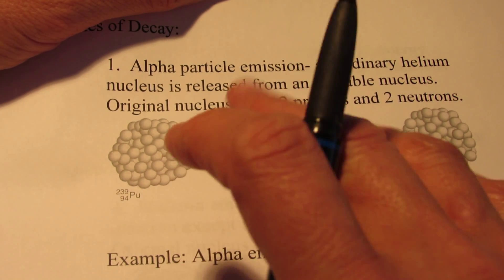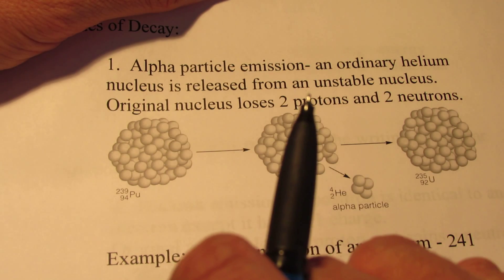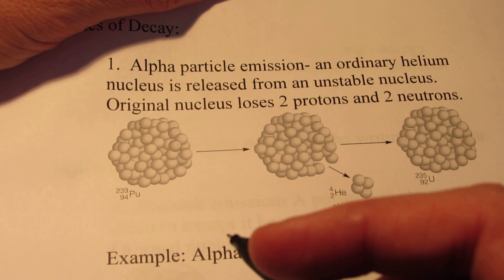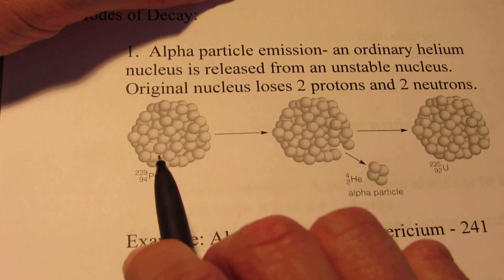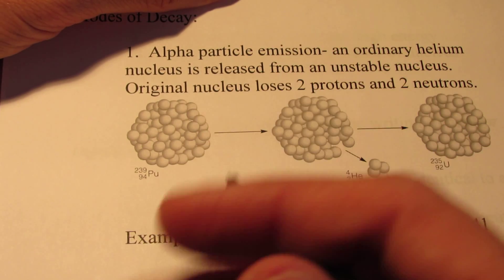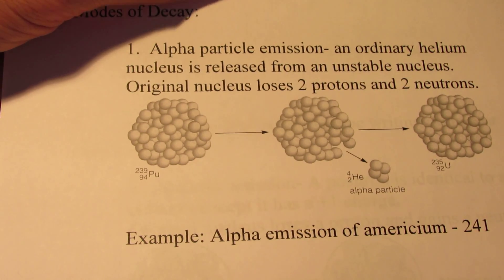As those atoms get bigger and bigger, and as the proton to neutron ratio changes, they can become unstable. And some of the atoms become so unstable, they start ejecting protons or neutrons or other particles in an attempt to stabilize themselves.